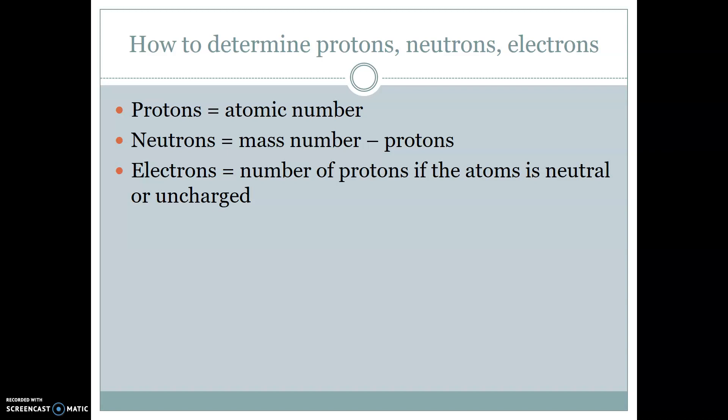So, as a refresher, how do we determine protons, neutrons, and electrons? Protons can be determined by the atomic number, which is unique to each element. Neutrons can be determined by taking the mass number and then subtracting the protons, also the atomic number. And then the electrons will equal the number of protons if the atom is neutral or if it is uncharged. If it has a charge, then we'll just have to subtract that from the protons.